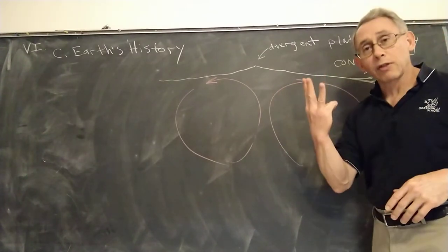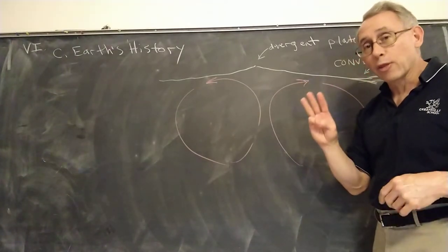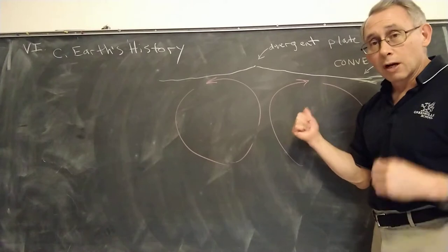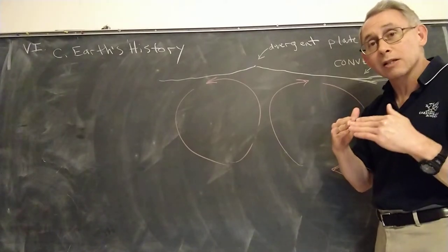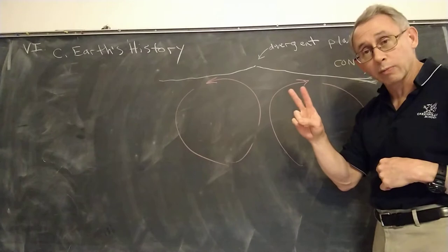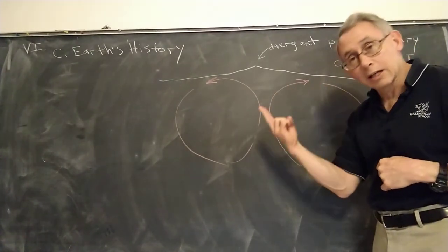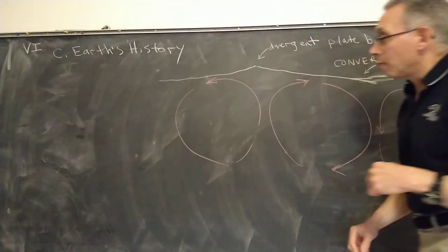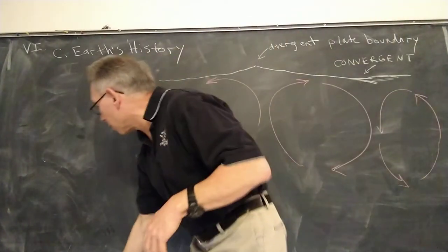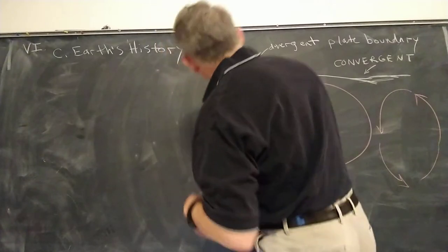At a convergent boundary, three different things can happen, and that's where we left off in class. Three different things can happen at one of these boundaries where the plates are going together, and it depends on the types of plates. The reason three things can happen is because there are two types of crust: oceanic crust and continental crust.